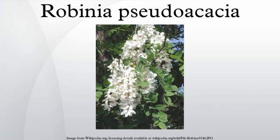Robinia pseudoacacia, commonly known as the black locust, is a tree of the genus Robinia in the subfamily Faboideae of the family Fabaceae. It is native to the south-eastern United States, but has been widely planted and naturalized elsewhere in temperate North America, Europe, Southern Africa and Asia, and is considered an invasive species in some areas. A less frequently used common name is false acacia, which is a literal translation of the specific epithet. It was introduced into Britain in 1636.